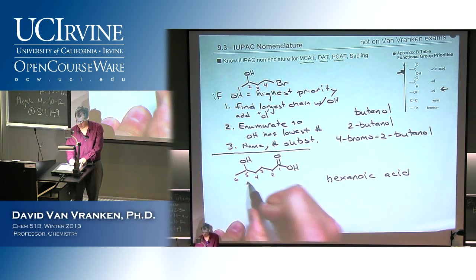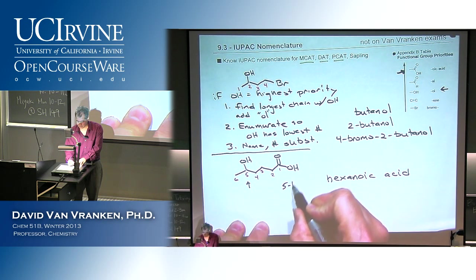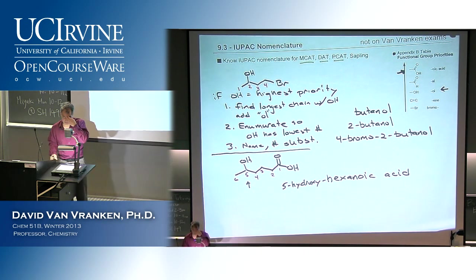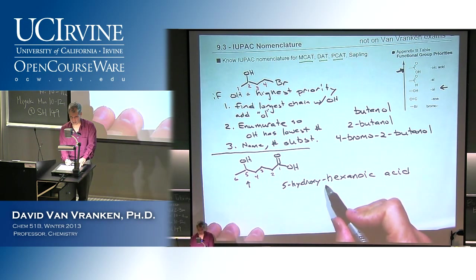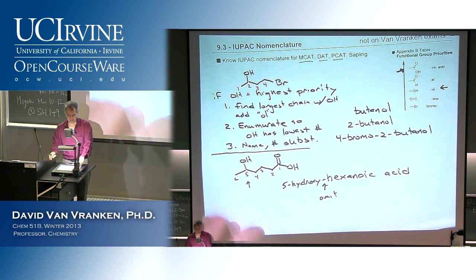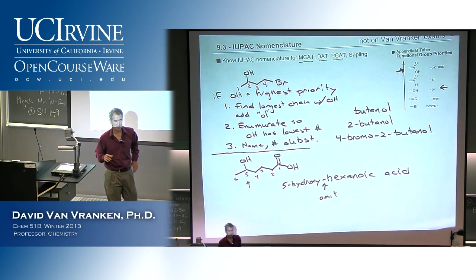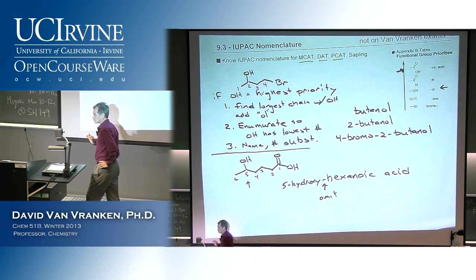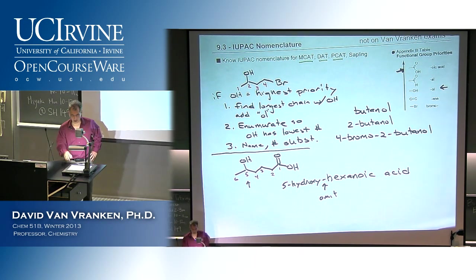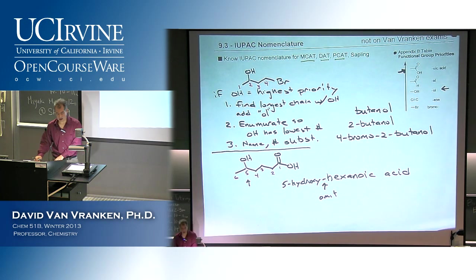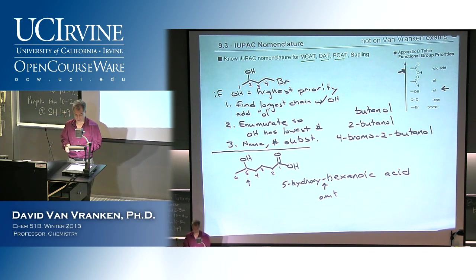It would be 5-hydroxyhexanoic acid. You notice you don't need the dash in that position. So you can see the importance of noting what's the highest priority functional group. If the highest priority functional group is an alcohol, the name ends in -ol. But if there's a different and even higher priority functional group, you'll simply describe it as a hydroxy-something-else.